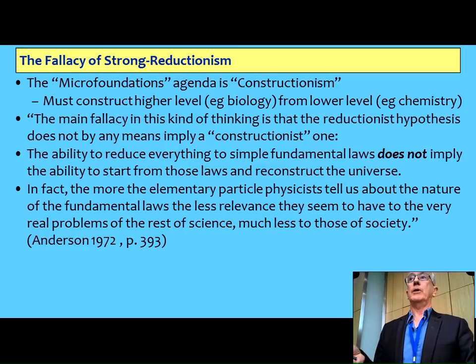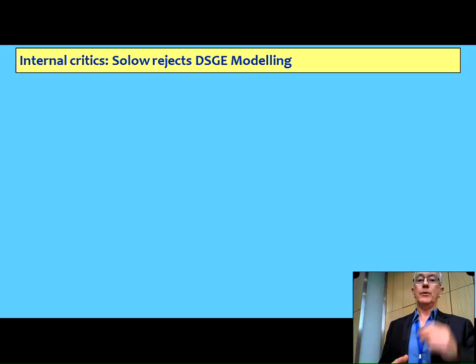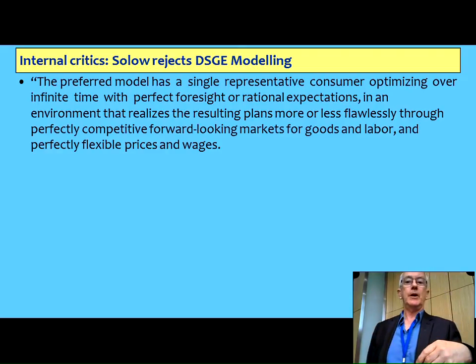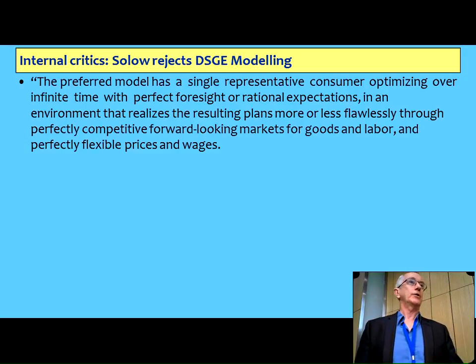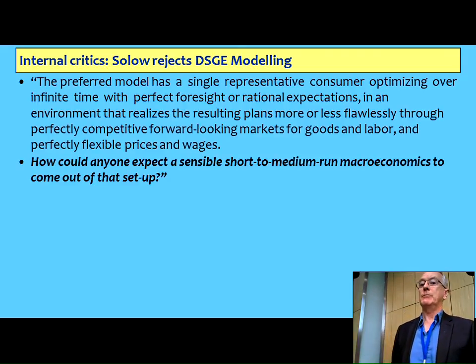It really took the financial crisis to prove how failed that was, because that was one of many reasons why conventional economists didn't see the crisis coming. Not all conventional economists can be tarred with that brush — one who can't, of all people, is Robert Solow. He rejects DSGE even more violently than I'm doing right now. He's been trying for a dozen years to get economists to realise they can't build macroeconomic models based on the growth model he himself constructed. His description: the preferred model has a single consumer optimising over infinite time with perfect foresight in an environment which realises plans more or less flawlessly, with perfectly competitive markets. His punchline: how can anyone expect sensible short-to-medium-run macroeconomics to come out of that setup?